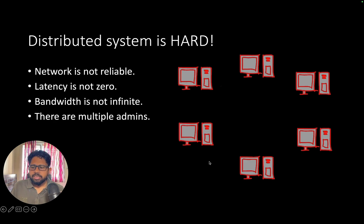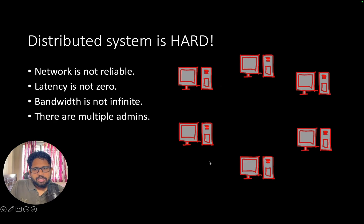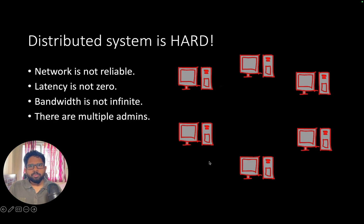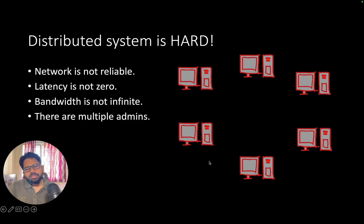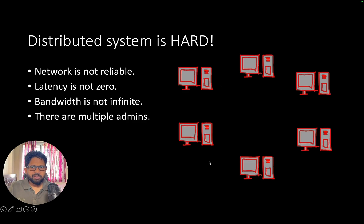Now, what exactly is a distributed system? We can define it as a system in which there is no one single master — no single king or queen. If one machine dies, the other machines would come and take charge. That's the overall definition and the way you can think about a distributed system.